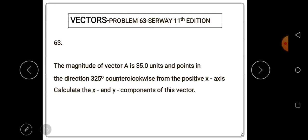The question reads: The magnitude of vector A is 35.0 units and points in the direction 325 degrees counterclockwise from the positive x-axis.